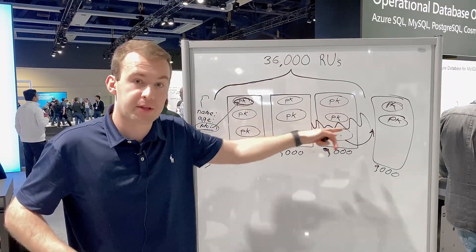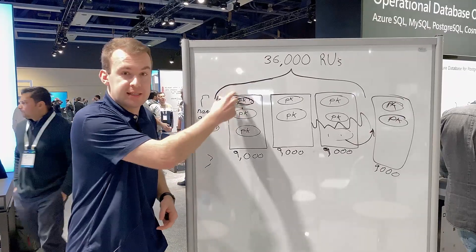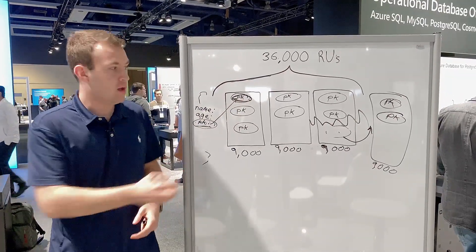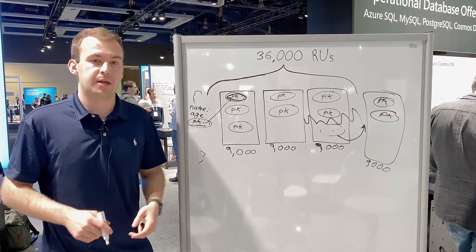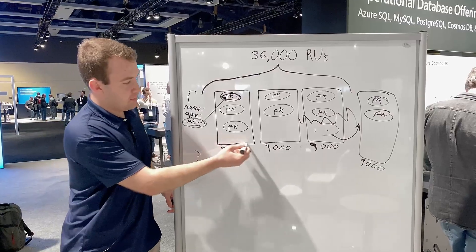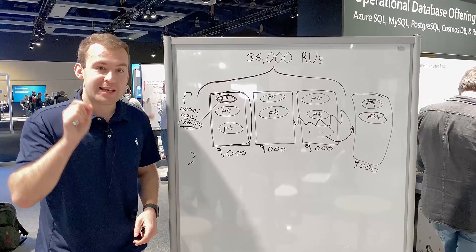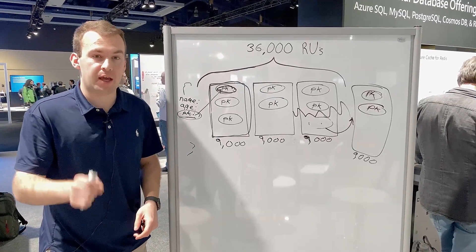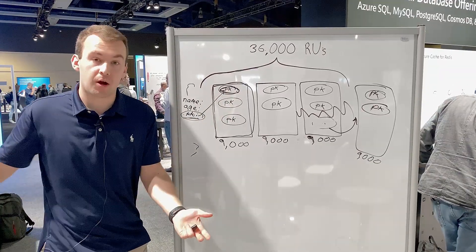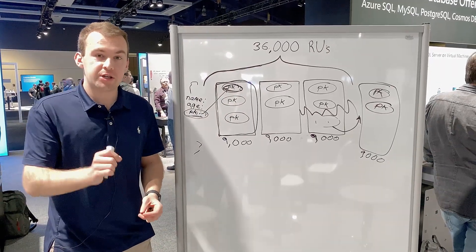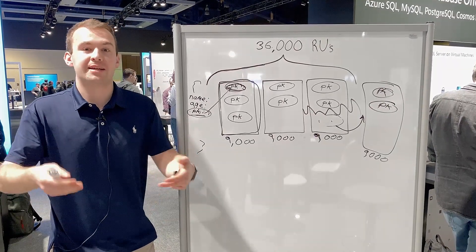We make the guarantee that all the data within a single partition key is going to be stored on the same physical partition. When partition splits happen, we'll split an existing physical partition but we will not split an existing logical partition. Cosmos DB needs to guarantee that all data remains on the same individual partition key. Each physical partition can scale up to 10,000 RUs or 10 gigabytes of data, and because each partition key cannot be split across physical partitions, each individual partition key can also scale up to 10,000 RUs or 10 gigabytes of data.